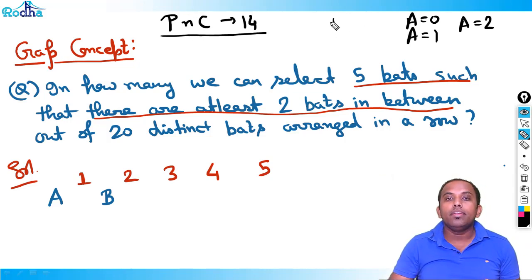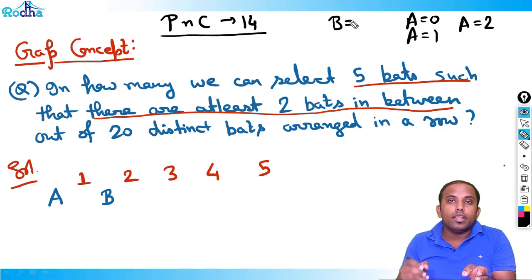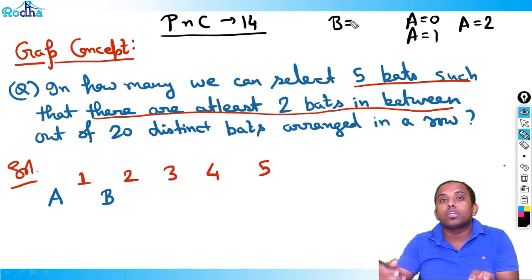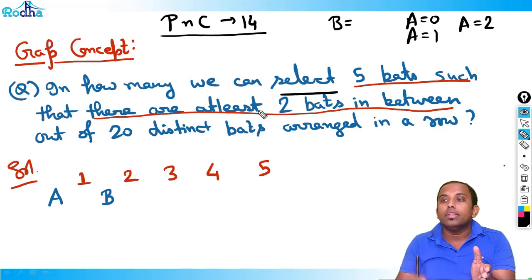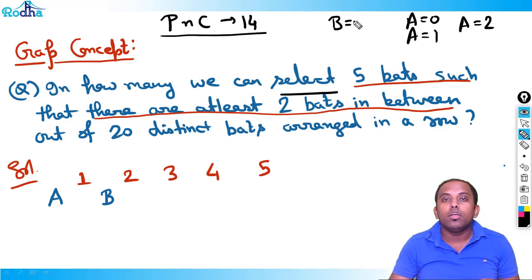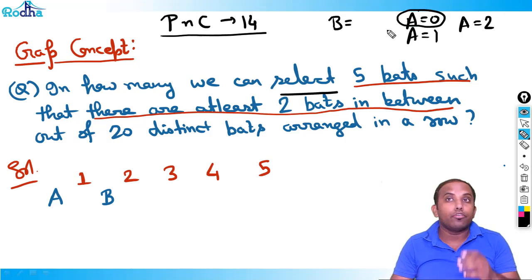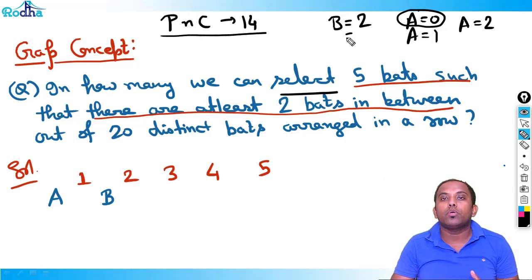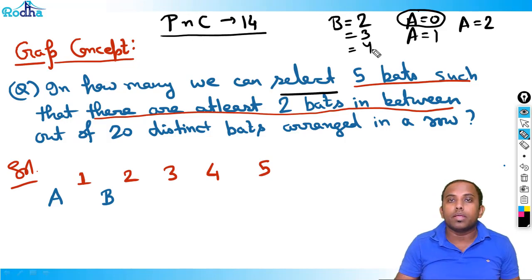Similarly, B is the number of bats in between first and second bat. If I pick first bat, then I will be picking anything after the third bat because there has to be at least two bats in between. So if I pick first bat and fourth bat, A is 0 and B is 2. If I pick fifth bat, B equals 3. If I pick sixth bat, B equals 4.